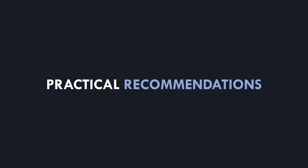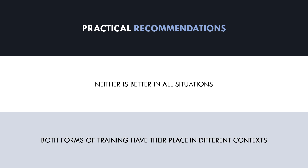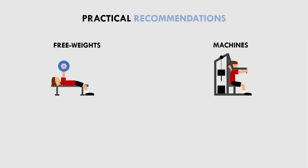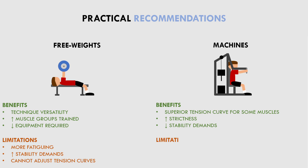So what can we conclude from all of this information? Neither machines nor free weights are inherently better in all situations — both forms of resistance have their unique benefits. Free weights are generally more efficient, versatile, and train more muscle groups simultaneously. However, they are more fatiguing, require higher stability demands, and may not provide the best tension curves for some muscle groups. Machines, on the other hand, require low stability demands, make the movement extremely strict, and can have more favourable tension curves in some cases, providing a very concentrated stimulus to the specific muscle being trained. However, they are less time efficient, and not all machines suit the individual anatomy of each trainee.